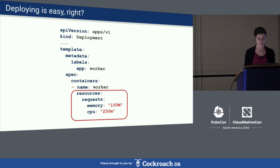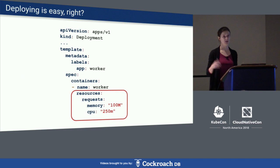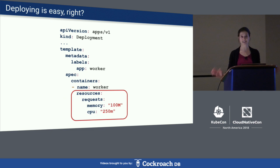You have probably all seen something like this. This is a simple deployment — or part of a simple deployment. You just want to deploy a simple thing to your Kubernetes cluster. I would like to focus specifically on the resource request part. Here we say that the deployment needs 100 megabytes of memory and 250 milli CPUs. But how do we know that?